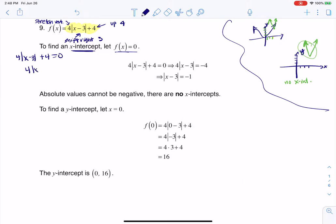I subtract 4 from both sides. Then I want to isolate the absolute value term, so I divide by 4, and I get that the absolute value of x minus 3 is equal to negative 1.